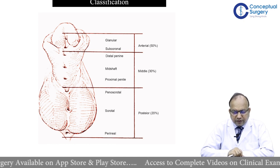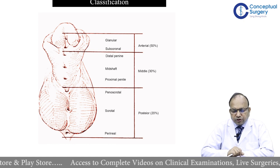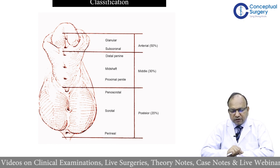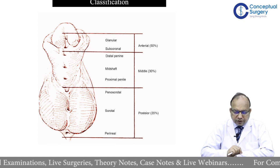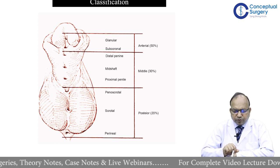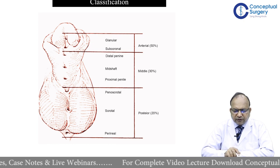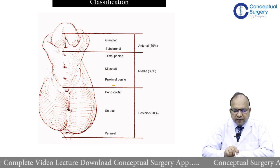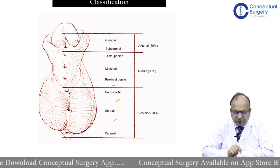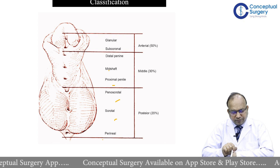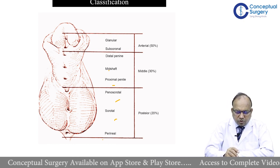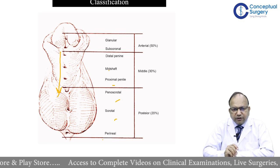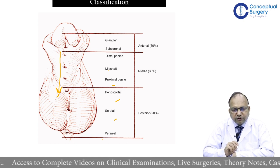Classification of hypospadias is based on the location of the meatus. It can be broadly divided into anterior, middle, and posterior types — or more specifically: glanular and subcoronal for anterior; distal, mid, and proximal penile for middle; and penoscrotal, scrotal, and perineal for posterior hypospadias. An important principle is that as you go more proximal, the severity of hypospadias increases.